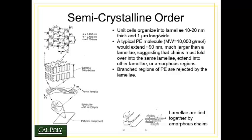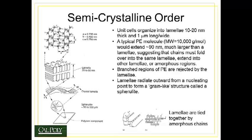Branched regions of the polyethylene are rejected by the lamellae. The reason for this is because the branched sections of the chain are difficult to fold and coordinate into the orthorhombic unit cell. So they tend to stick outside the lamellae, limiting the dimensions of the lamellae and therefore limiting the amount of crystallinity found in the polymer.